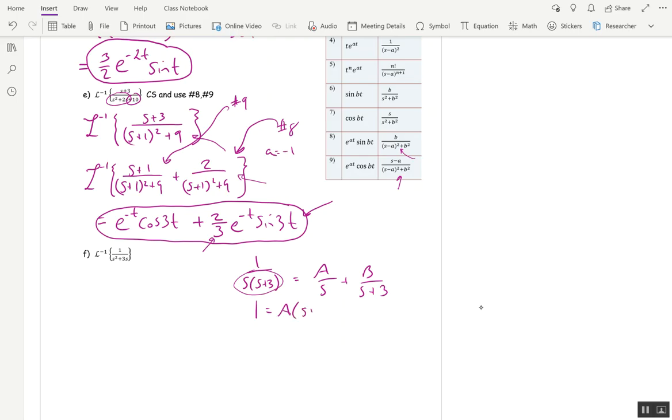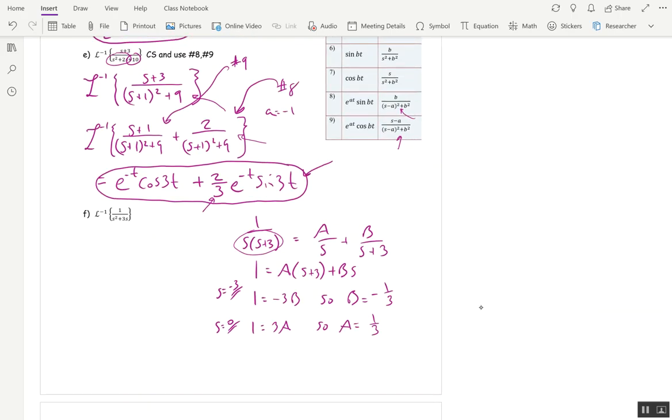Let's clear denominators. Clear denominators. Multiply both sides by the denominator on this side. This gives us 1 equals a times s plus 3 plus bs. And then pick convenient values of s. If s is negative 3, then I get 1 equals negative 3b. So b is negative 1 third. And then if s is 0, 1 equals 3a. So a is 1 third. So by partial fractions, I want L inverse of 1 third over s minus 1 third over s plus 3. Now it's super easy. This is just 1 third minus 1 third e to the negative 3t.